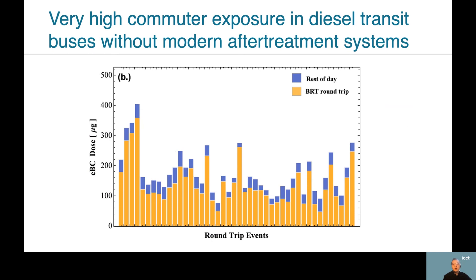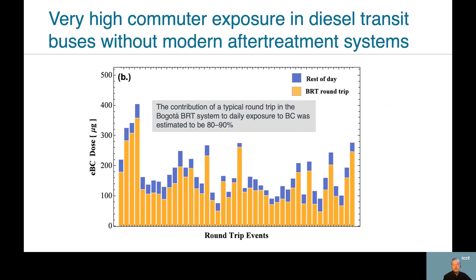Empirical data from Bogota's bus rapid transit system, which runs on pre-Euro 6 buses, showed that people who ride those buses are in effect exposed to black carbon pollution. For residents of Bogota, the negative health effects of black carbon can be greatly reduced if exposure to black carbon emissions from buses is minimized, and soot-free buses would offer this type of solution.